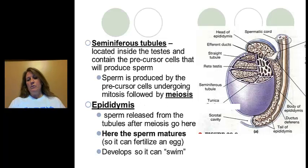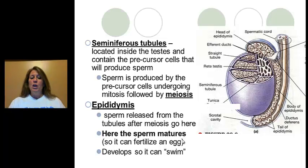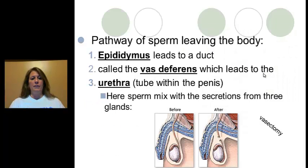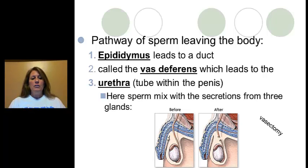The epididymis sits on top of the testicle in cross section. The coils from the testicles lead out and uncoil, eventually becoming a duct, then the vas deferens. The epididymis is where sperm mature — they develop the flagellum and mid-piece so they are able to swim. While inside the testicle, they are simply cells and are not mobile; they cannot move or fertilize the egg. You need to know the pathway: from the epididymis to the vas deferens, then past some glands, and finally out through the urethra.